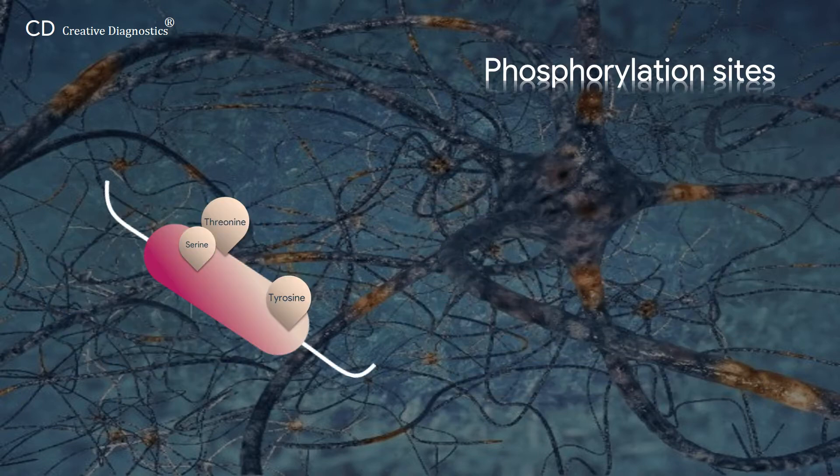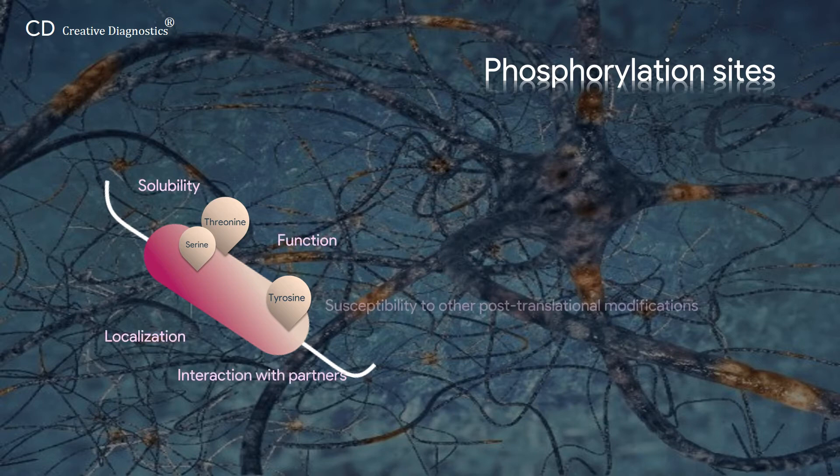Phosphorylation is the most common post-translational modification of Tau protein, which affects its solubility, localization, function, interaction with partners and susceptibility to other post-translational modifications.